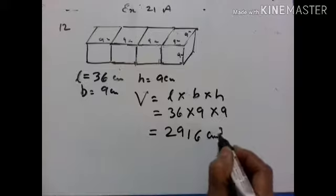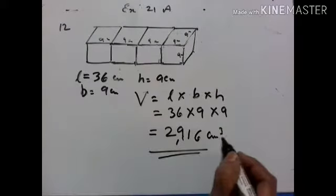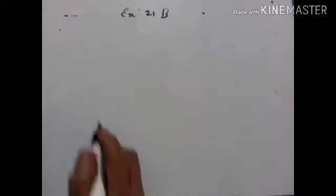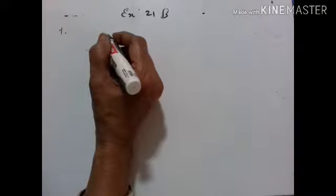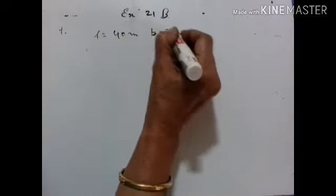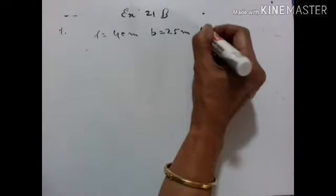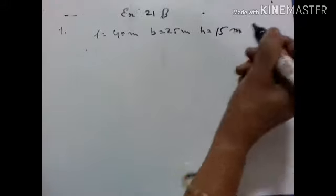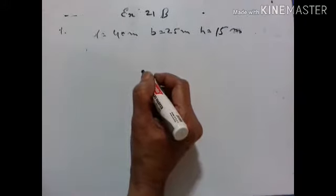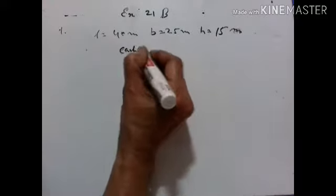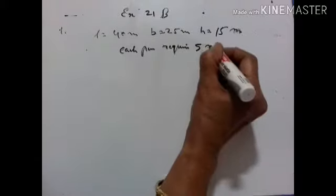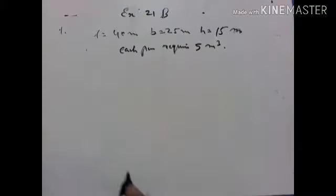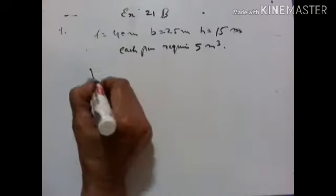Let's go to Exercise 21b, first problem. How many persons can be accommodated in a big hall of dimensions 40 meter, 25 meter, and 15 meter, assuming that each person requires 5 meter cube of air? Each person requires 5 meter cube of air. Let us find the volume of this room.